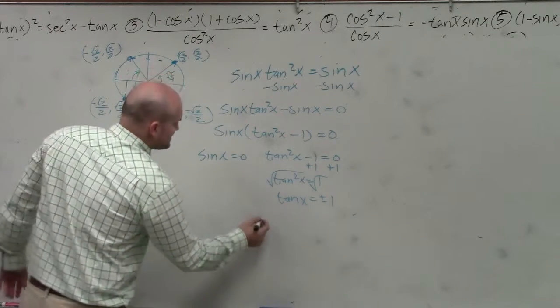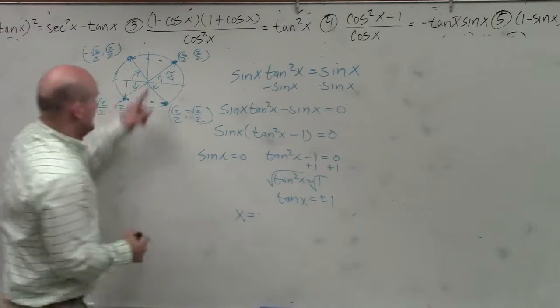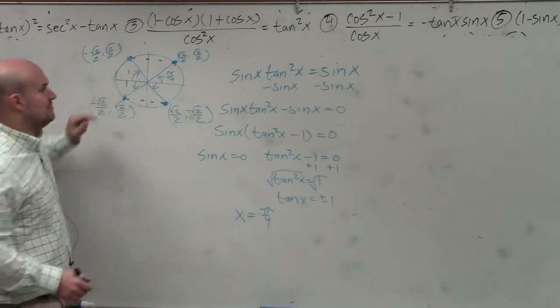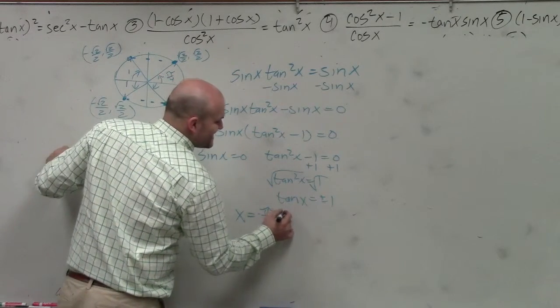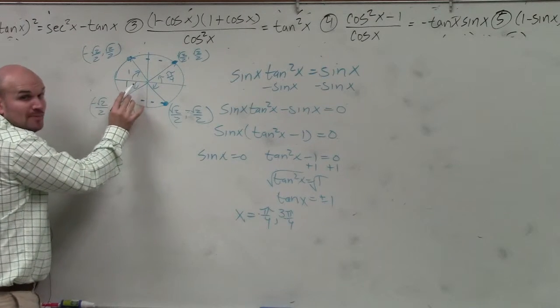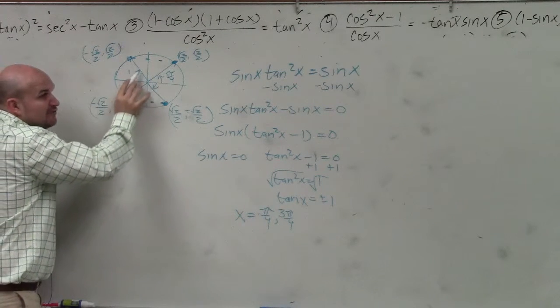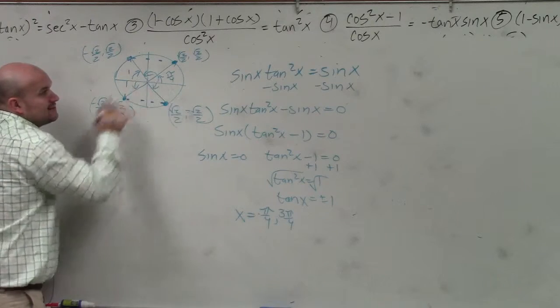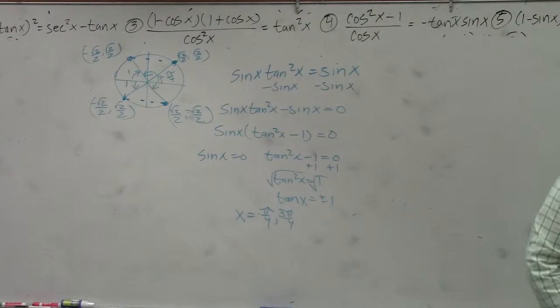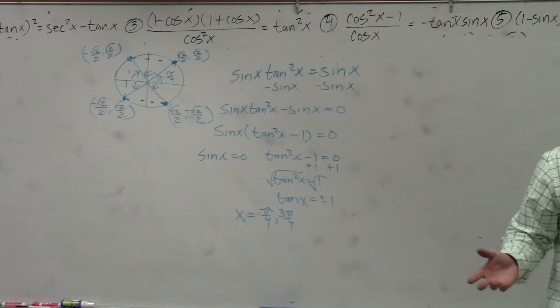So therefore, x is going to equal pi over 4. This is going to be, anybody? 3 pi over 4. Because halfway around the circle is 4 pi over 4, right? It's pi over 4 short. That is 3 pi over 4. Is everybody OK with that? Any questions? Raise your hand. Say no, it didn't make sense.